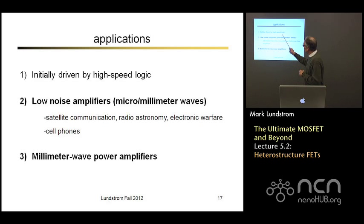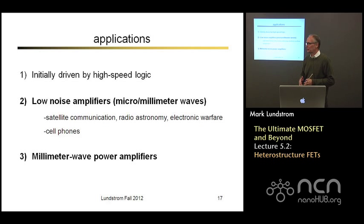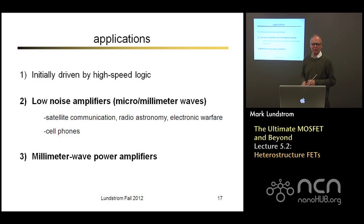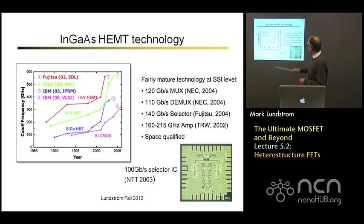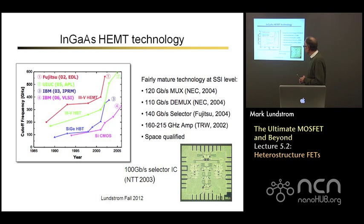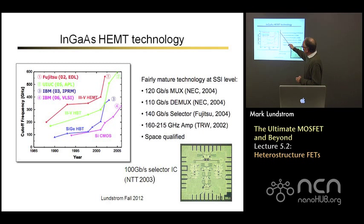What are the applications for these devices? Initially people were excited about high speed logic, but it has proven very difficult to compete with silicon MOSFETs there. However, they have very important applications in high frequency RF applications — things like low noise amplifiers for satellite communication, radio astronomy, and cell phones use HEMTs as the low noise front end for the receiver. There are also millimeter wave power applications. You can do some digital-analog circuits, multipliers, demux circuits — small numbers of devices operating at very high frequencies needed for specialized applications. Three-five devices tend to have a speed advantage of a factor of about 2 over silicon.